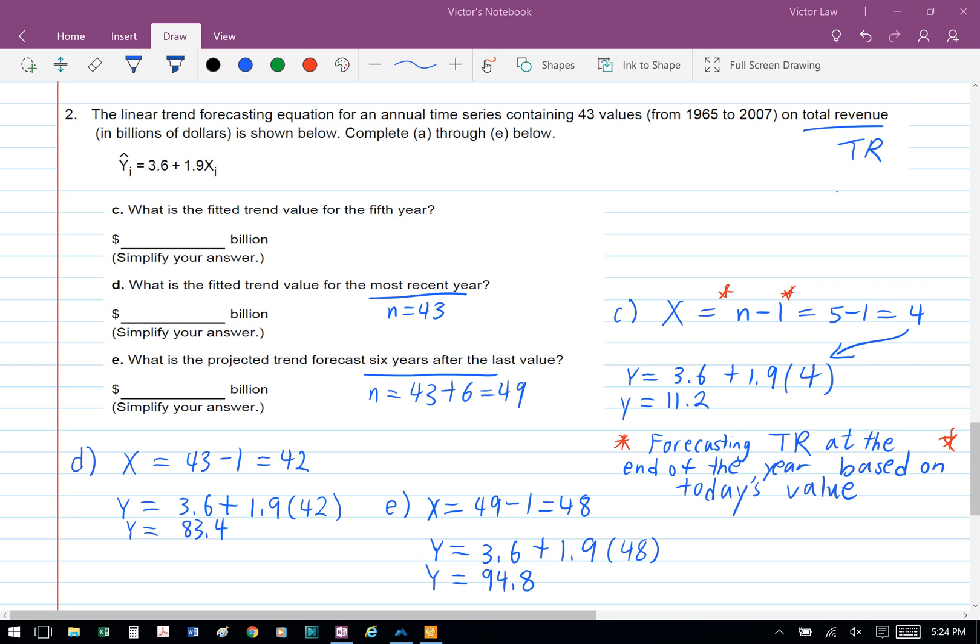Lastly, for Part E, we're asked to find the projected trend forecast six years after the last value. Our n here is 43 plus 6, so n equals 49, and x equals 49 minus 1, so x equals 48. We plug it into the total revenue function: y equals 3.6 plus 1.9 times 48, so y equals 94.8. And that's question 2.